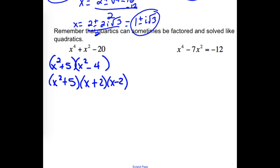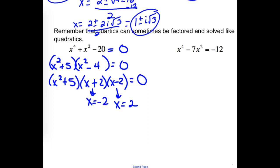Now this was not set equal to anything — what if I had equals zero on the end? We can solve those. x equals 2, x equals negative 2. For the first factor (x squared plus 5), x squared would have to be negative 5, giving plus or minus i√5. Four solutions and it was degree 4.